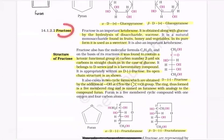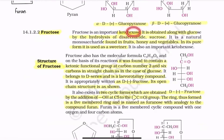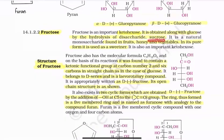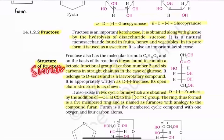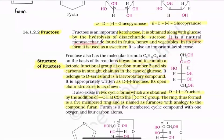Next is fructose. Fructose belongs to the keto-hexose category — it has a ketone group and six carbon atoms. It is obtained along with glucose by the hydrolysis of the disaccharide sucrose. It is a natural monosaccharide found in fruits, honey, and vegetables, and in its pure form is used as a sweetener.